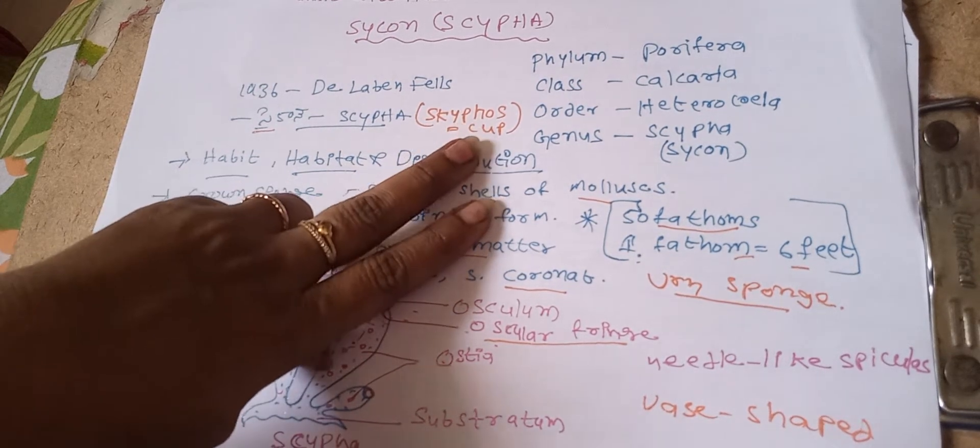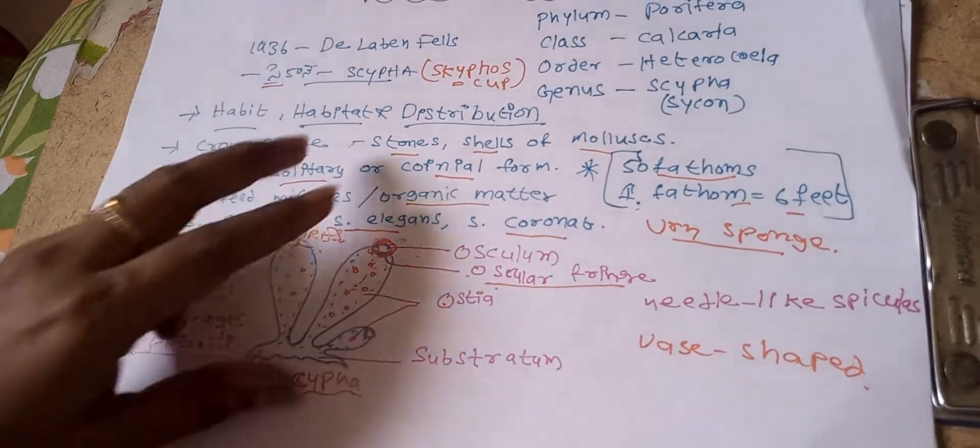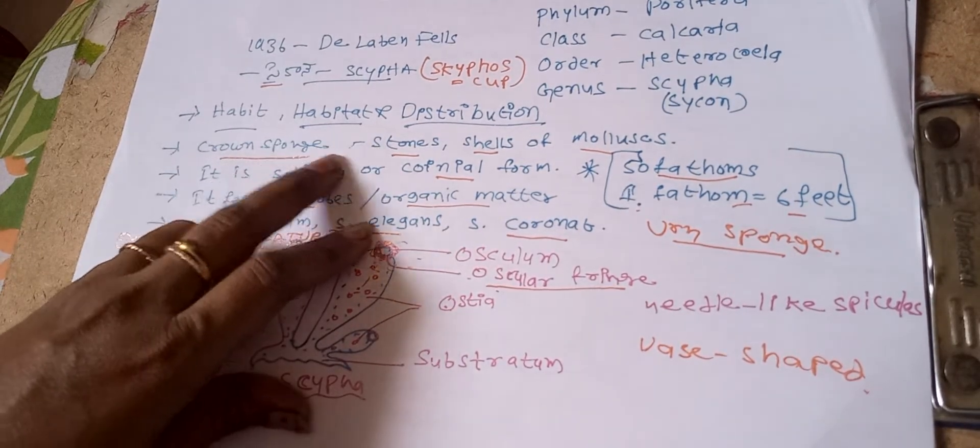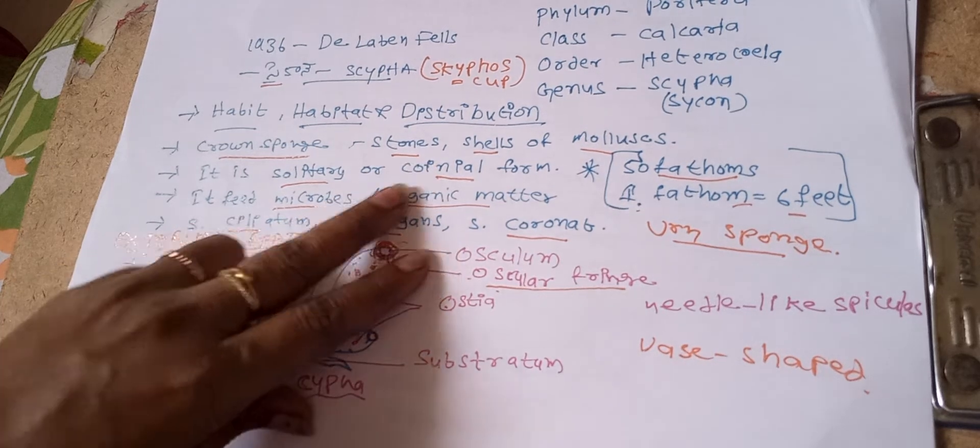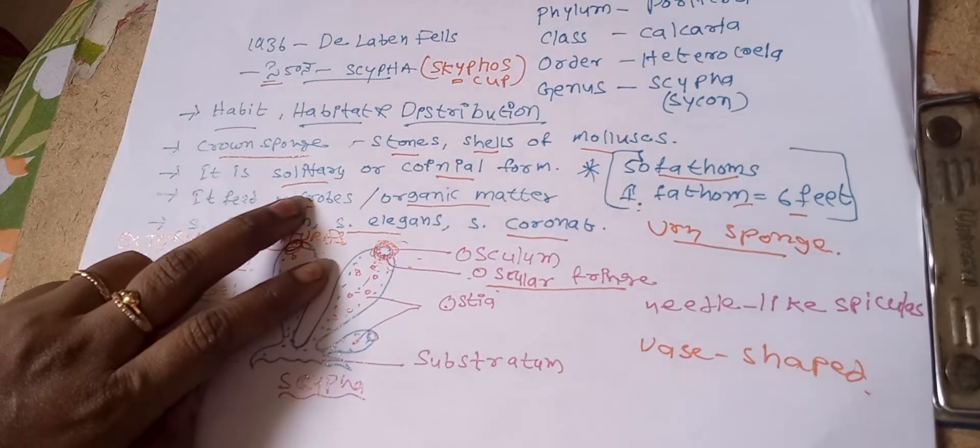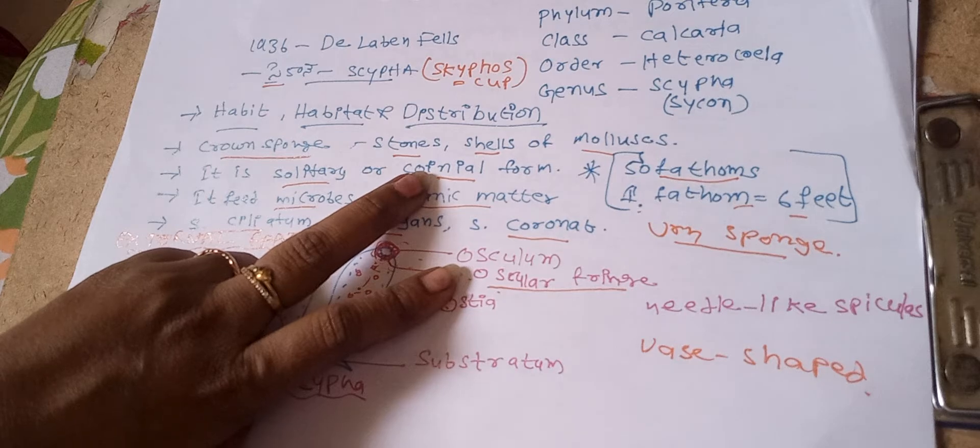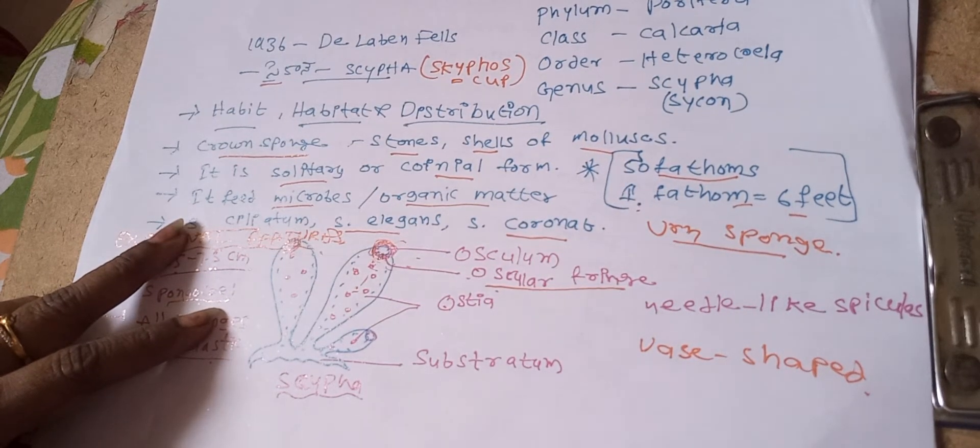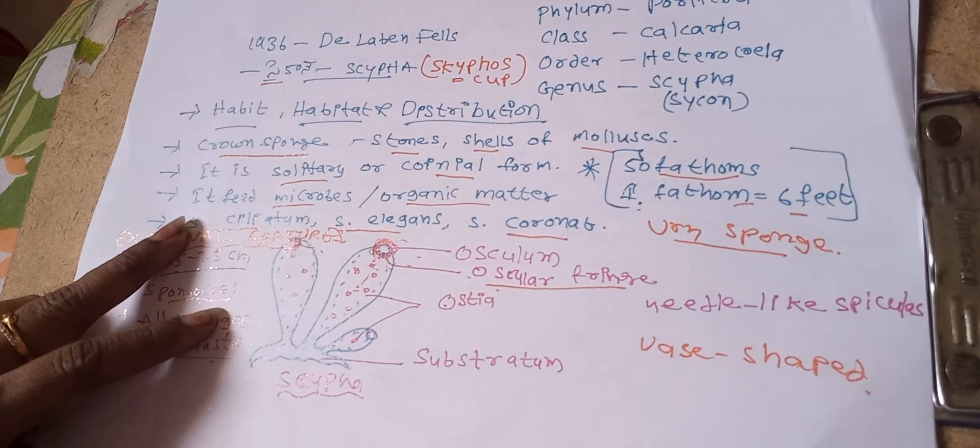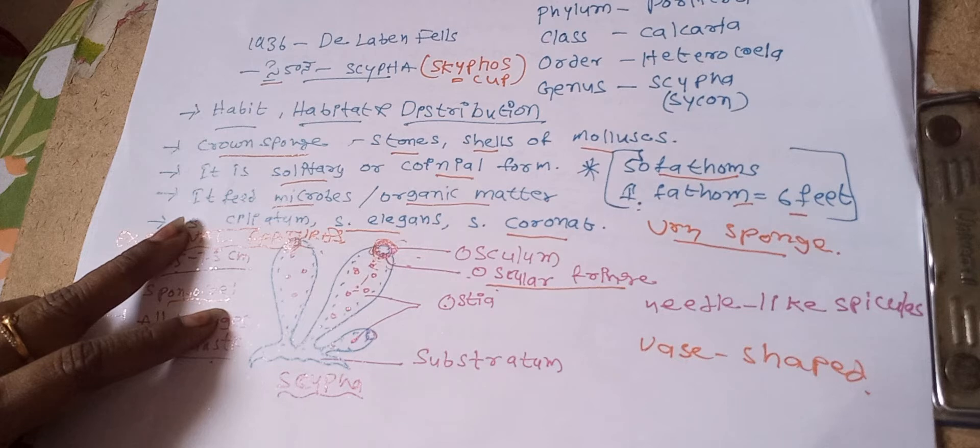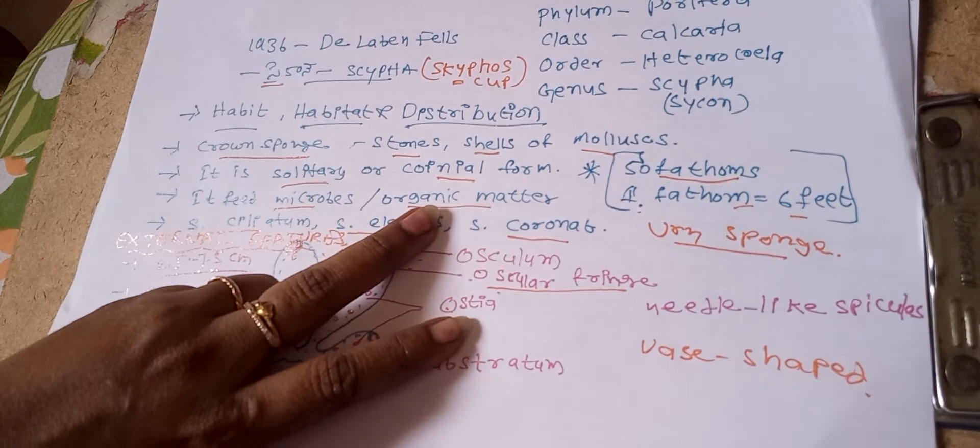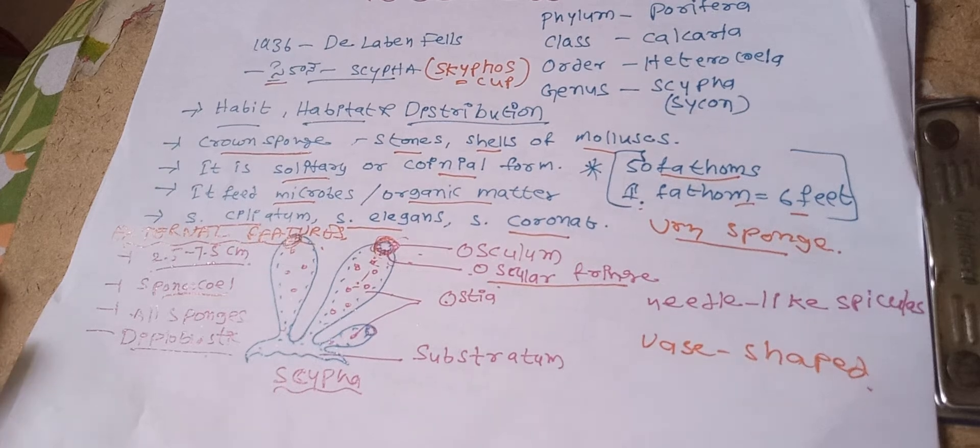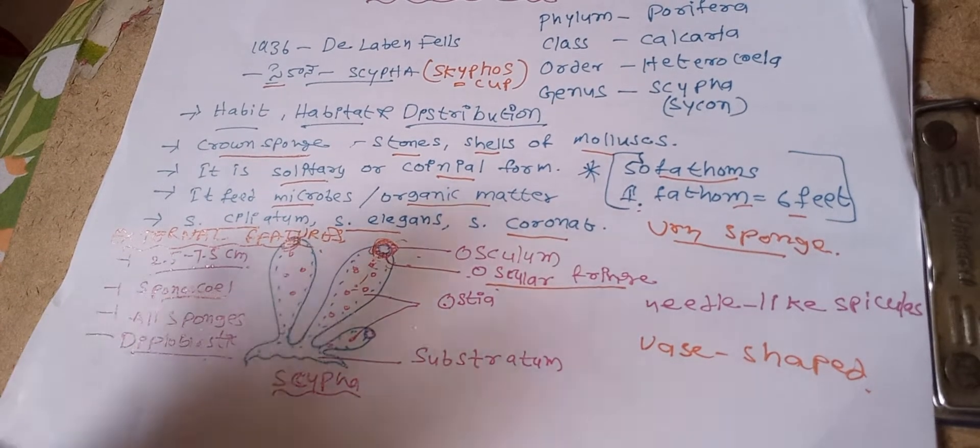Scypha means cup-like shape. First, habitat and distribution. Scypha also known as crown sponge. It is a small marine form. Sponge is found attached to stone shells of mollusks. It is solitary or colonial form. It is found in shallow water up to a depth of 50 fathoms. One fathom is equal to 6 feet. Their wave provides the animal with plenty of food and well-oxygenated water.